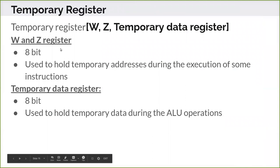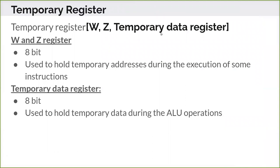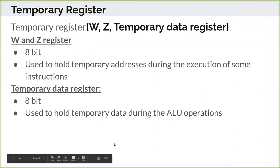Temporary registers consist of W, Z and a temporary data register — all 8-bit registers used to hold temporary data during execution. These are also not available to the user and are handled by the microprocessor internally.